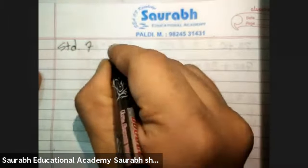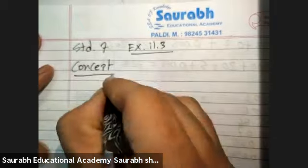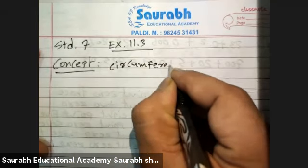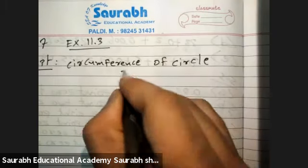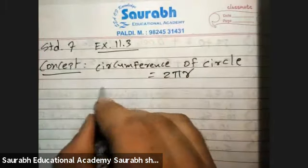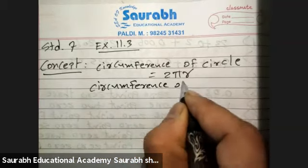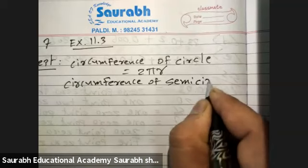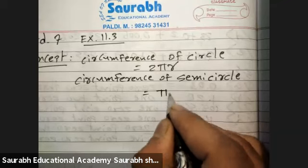Standard 7, Exercise 11.3. Concept: The circumference of a circle is 2πr, and the circumference of a semicircle is πr.